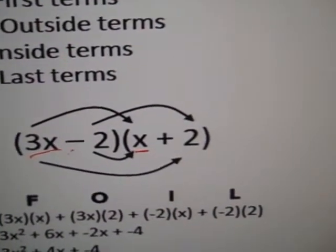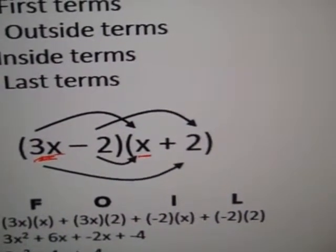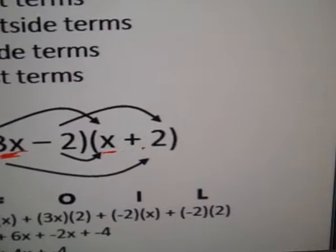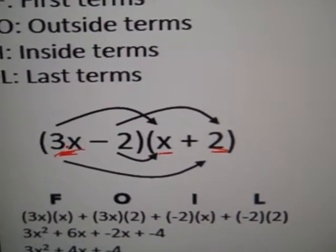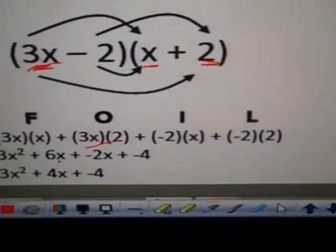Then the outside terms, the first one in here is also the outer term and over here the outer term is the last. 3x times 2, right here, 3x times 2, that should give us 6x.